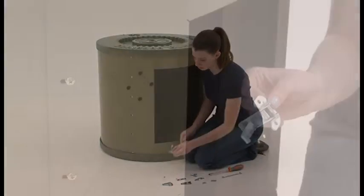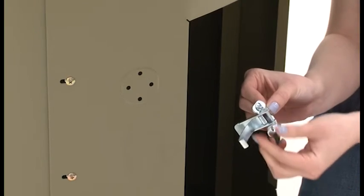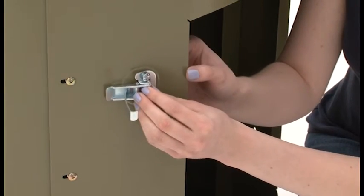Next attach the latches to one side of the door opening with the hooks toward the opening using the number 10 bolts, flat washers, lock washers and nuts.